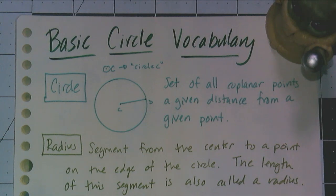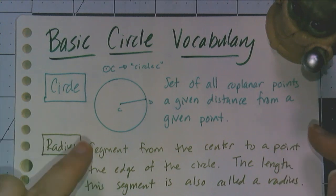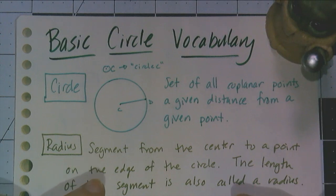Hey y'all, in this video we're going to go over some basic circle vocabulary, starting off of course with the definition of a circle. A circle is a set of all coplanar points that are a given distance from a given point.